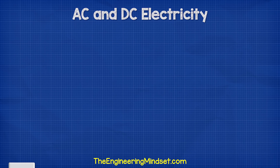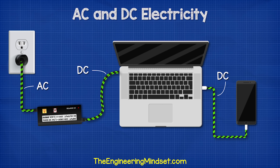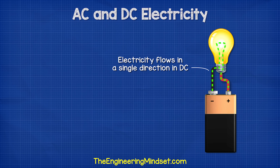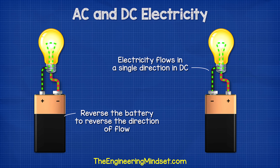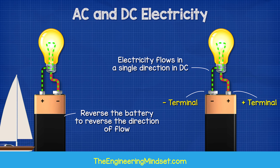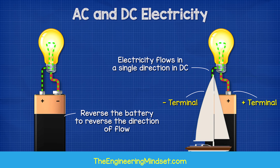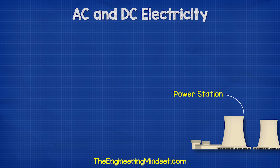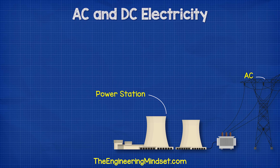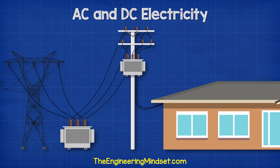Instead, they alternate between moving forwards and backwards, just like the tide of the sea. Your electrical devices like laptops and mobile phones will use DC electricity. In this type, the electrons flow in one direction only, directly from one terminal to the other. You can think of this like the flow of water down a river.